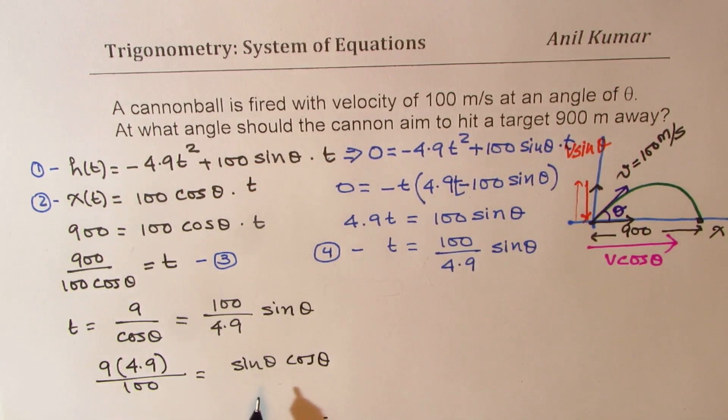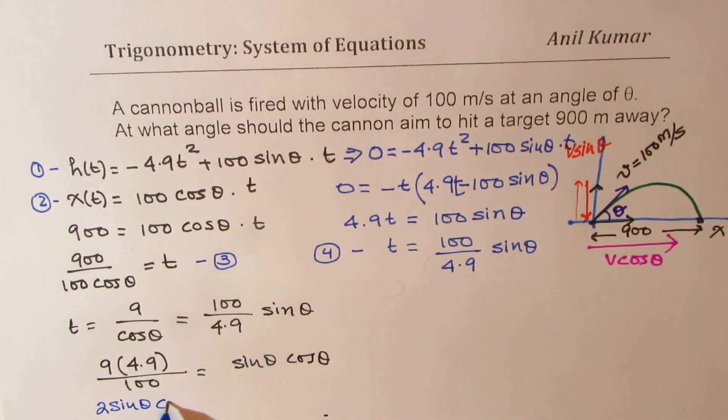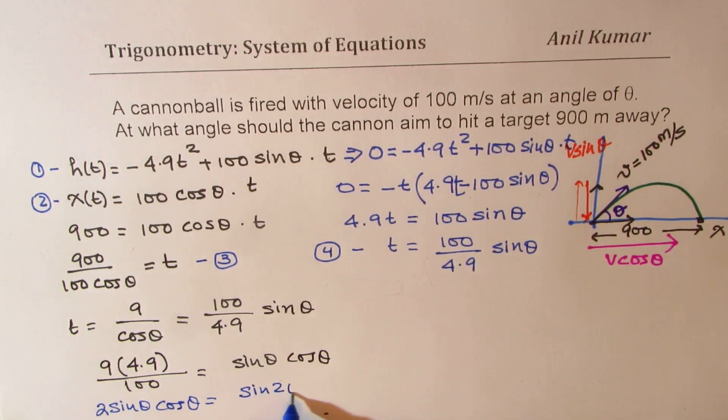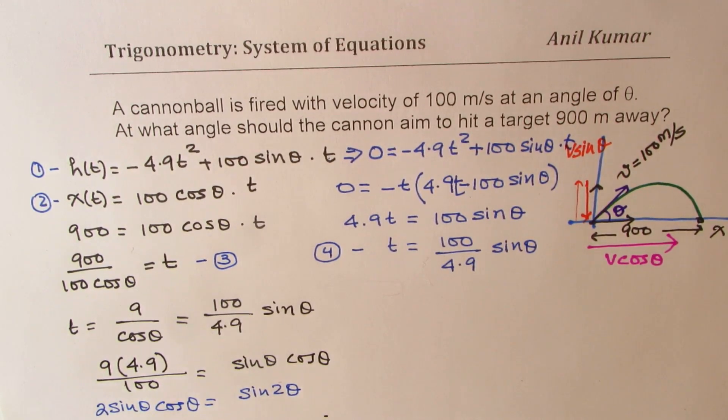So now, at this stage, I like to use one trigonometric formula, which is 2 sin theta cos theta equals to sin 2 theta. So this is the formula which I am going to use now to get the value of theta, right?